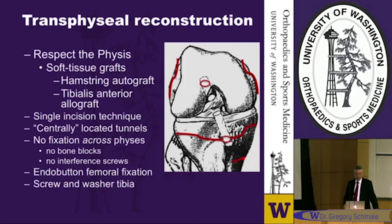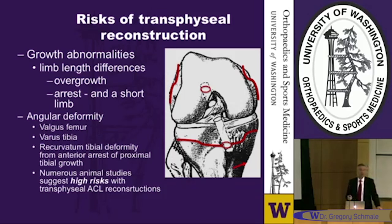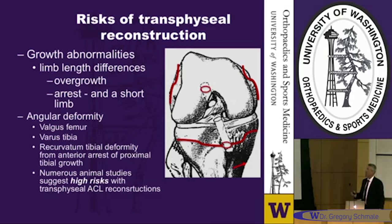A transphyseal reconstruction crosses the physis with tunnels. We try to make them more vertical and centrally located to decrease the forces that might lead to deformity. We don't provide any fixation across the physis and use soft tissues. The graft is hung off the femur with a winged washer and fixed to the tibia with a screw and washer in the metaphysis. There are risks, however: growth abnormality, a short limb, or a long limb from stimulation of the physis by drilling. There are reports of crooked limbs — the leg can bend out, in, or forward. These growth deformities are well documented in animal studies, though the numbers in pediatric case series have been small.